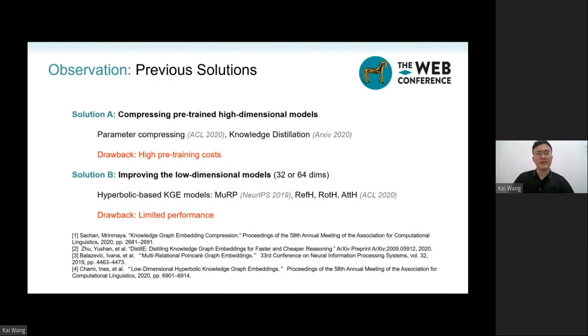Another way is to directly improve the low dimensional model by introducing mathematical methods. Methods using hyperbolic embedding have achieved great performance. However,